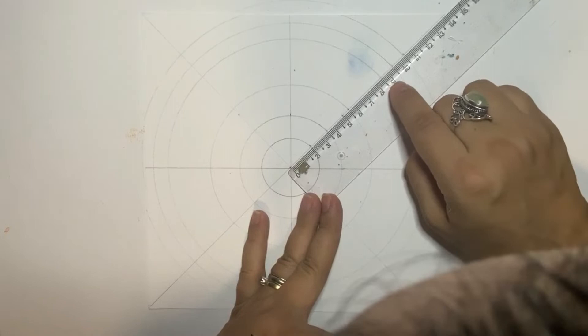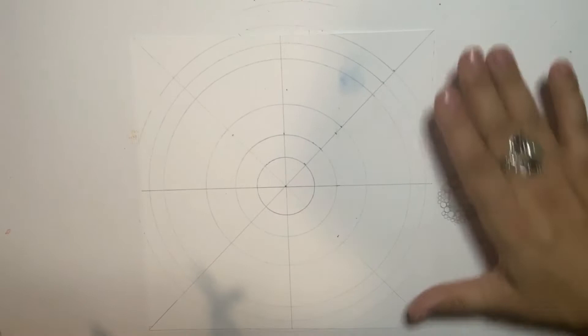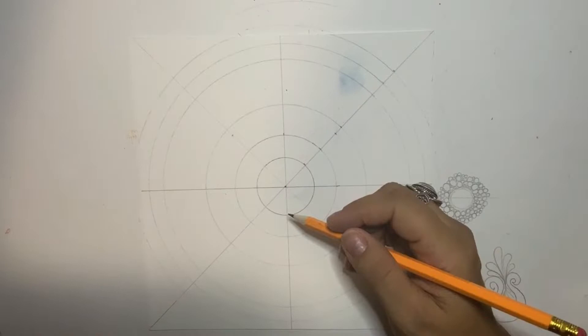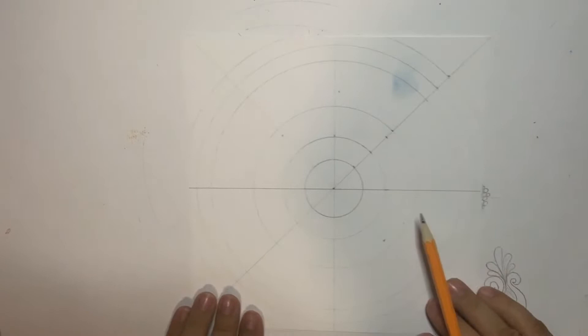So to summarize, the circles are at two centimeters, 3.5, 5.5, 8.5, and 9.5. So let's start drawing the center of the middle.